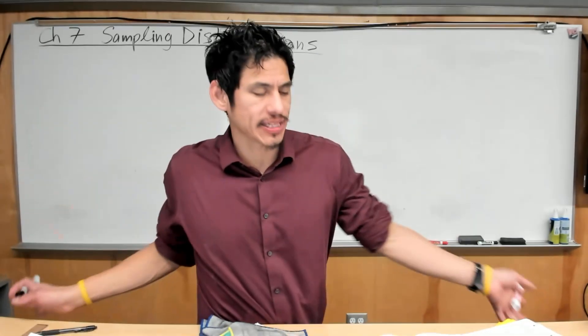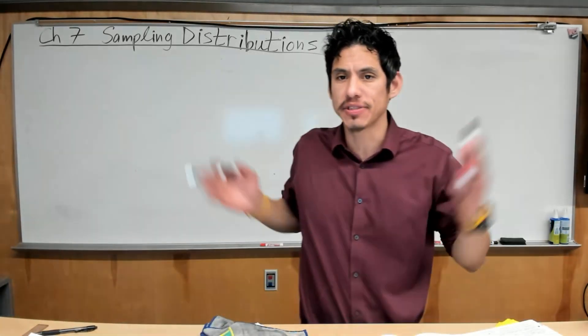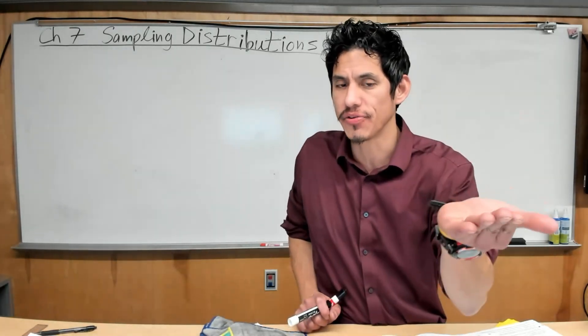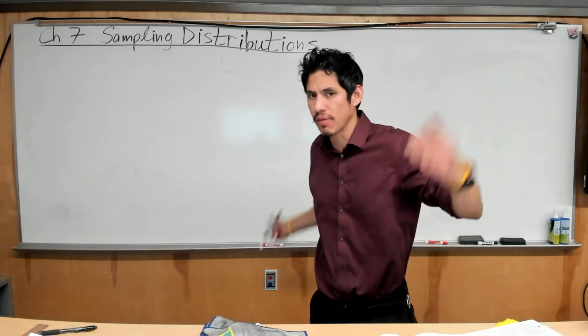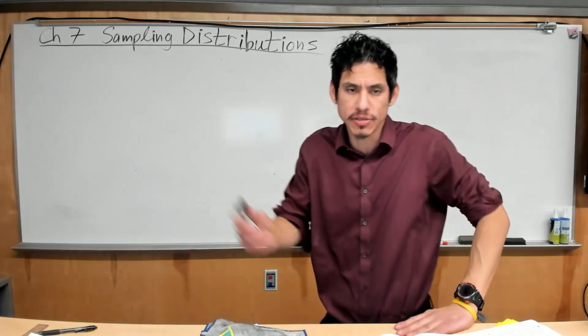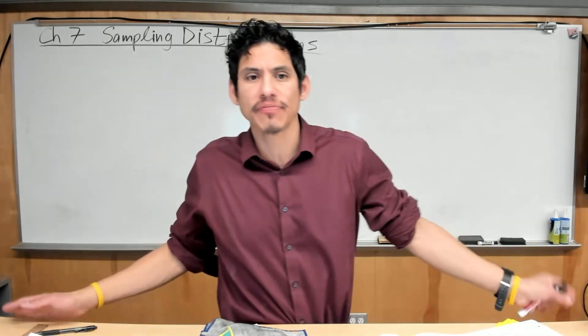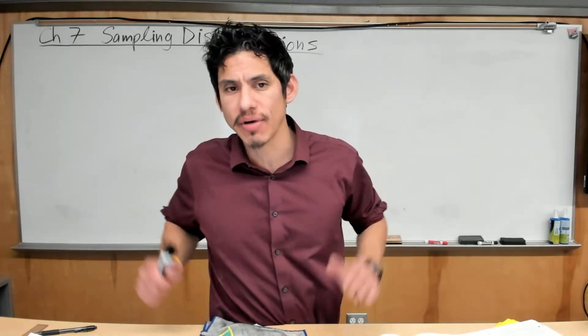All right, so in this video I'm going to be going over the key concepts in Chapter 7, Sampling Distributions. Since this is a review, I'm going to try to keep it quick and short because you're probably cramming for a test. So in sampling distributions, the first thing you have to know is the vocab words. Not that many, but just a few.